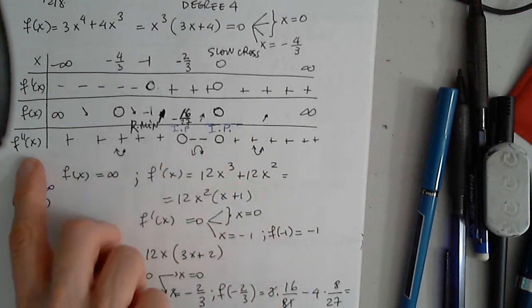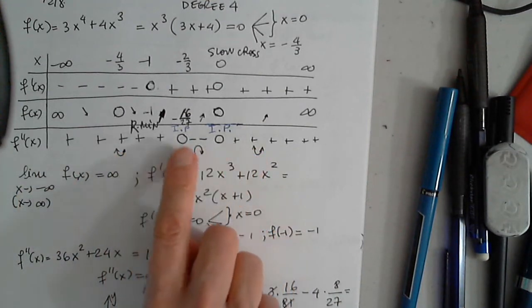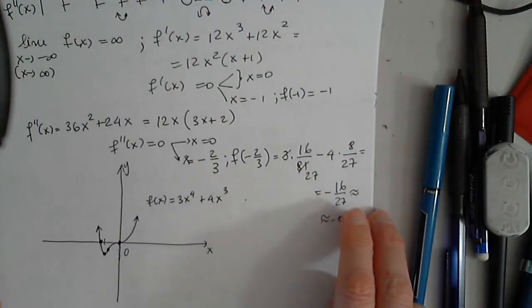Look what happens there. The derivative, the second derivative is 0, and it changes sign. So now the graph.